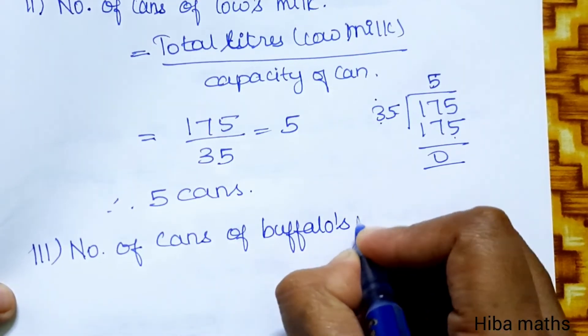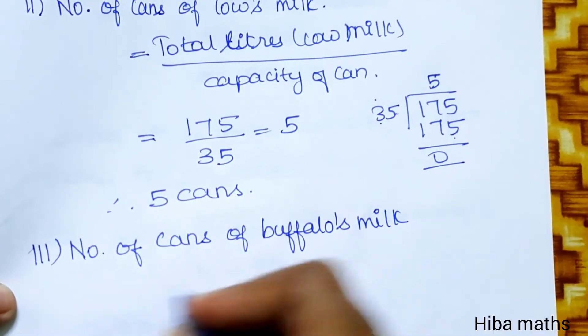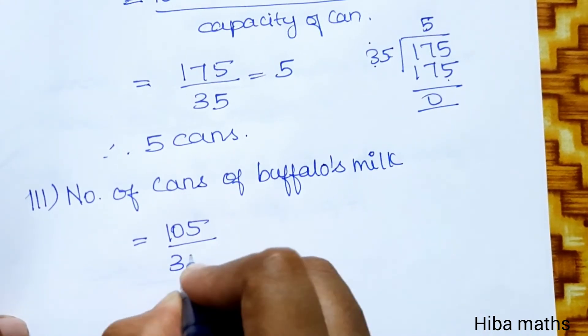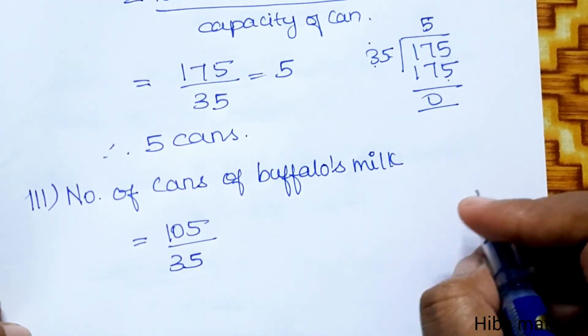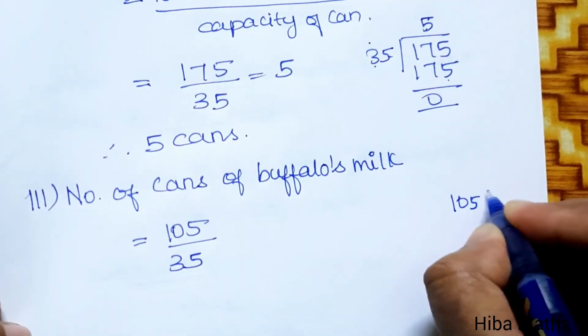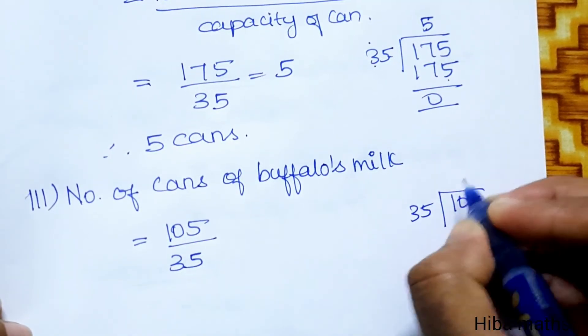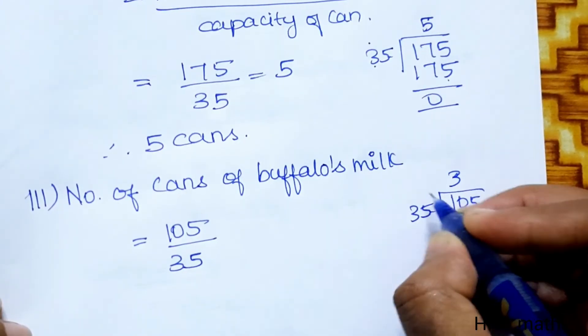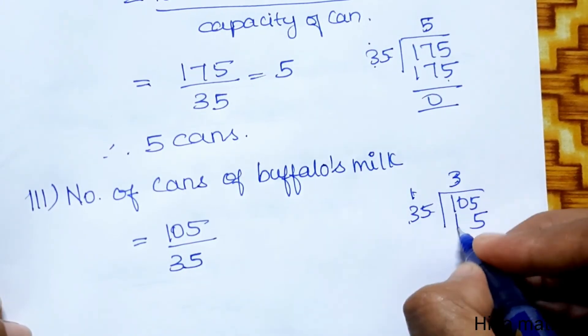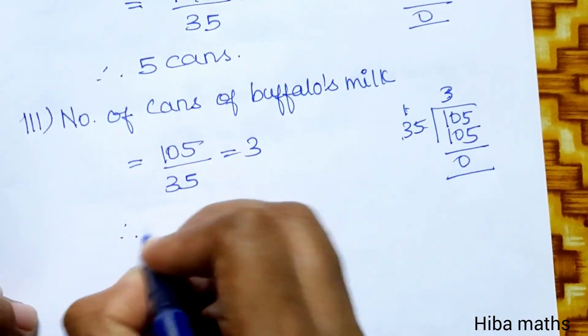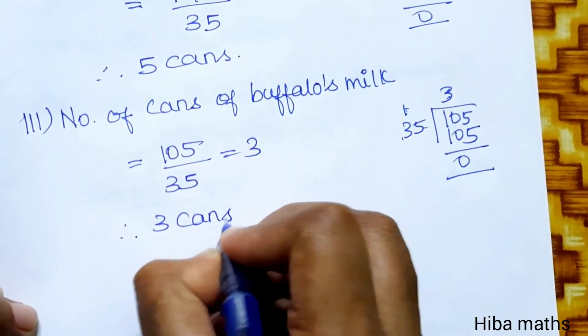Number of cans of buffalo's milk: 105 divided by 35. 35 times 3 equals 105. Therefore, 3 cans for buffalo's milk.